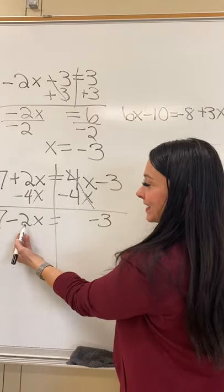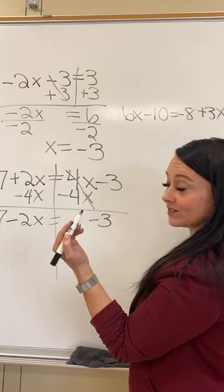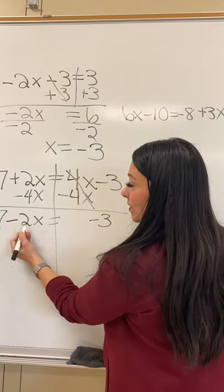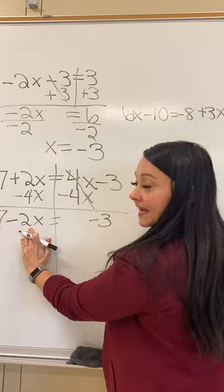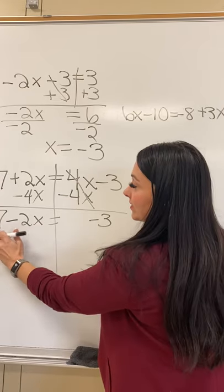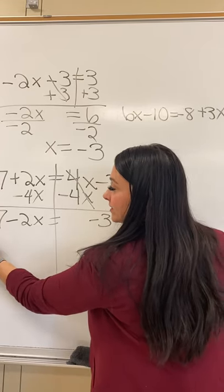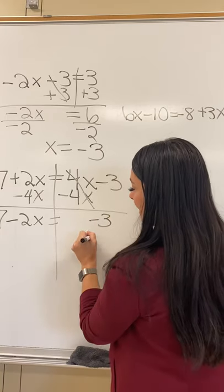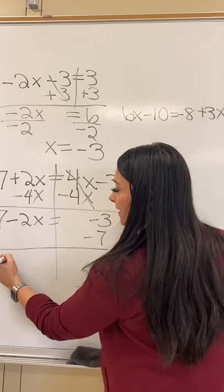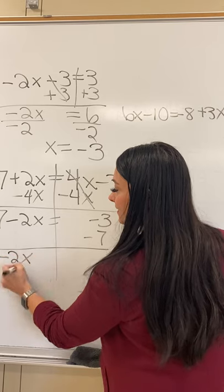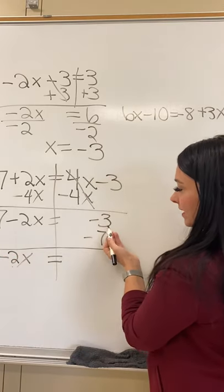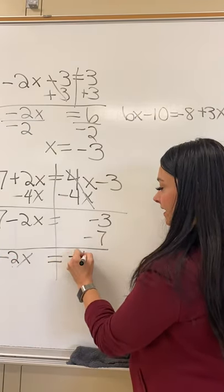So now I'm down to 7 minus 2x equals negative 3. So what I'm going to do is I want my x term to stay put where it's at. And I want to get rid of the 7. Since it's a positive 7, I'll subtract 7 from both sides. And I end up with negative 2x equals negative 3 minus 7 is negative 10.